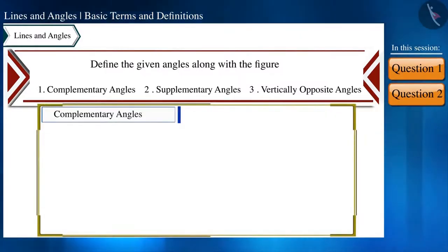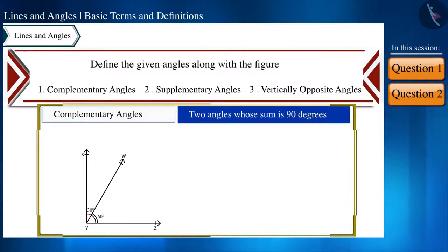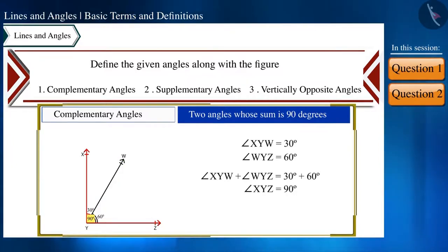First of all, complementary angles, whose definition is like this: if the sum of two angles is 90 degrees then we call such angles as complementary angles. For example, look at this figure. In angle XYZ, the measure of angle XYZ is 30 degrees and the measure of angle XYZ is 60 degrees. On adding the two we get 90 degrees.